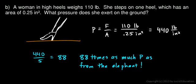Even though the elephant is big, the force is spread out over a large area from those big flat feet. And even though the woman is relatively small compared to the elephant, the force is concentrated in a very small area.